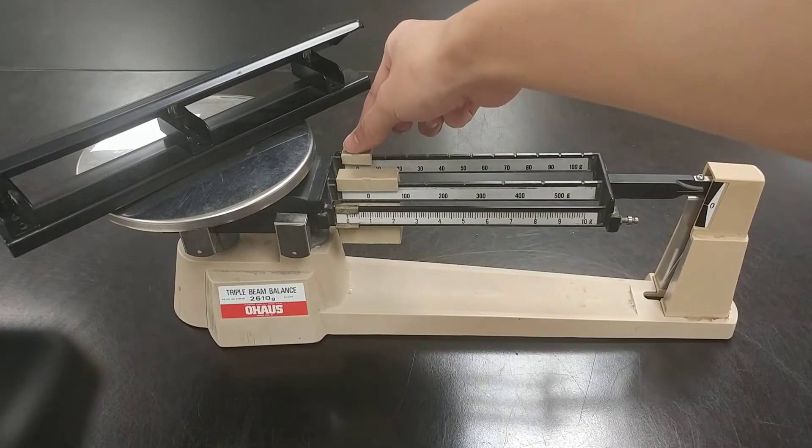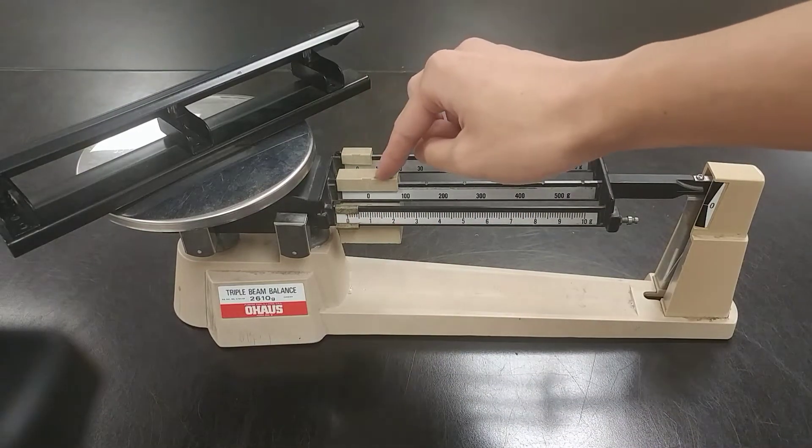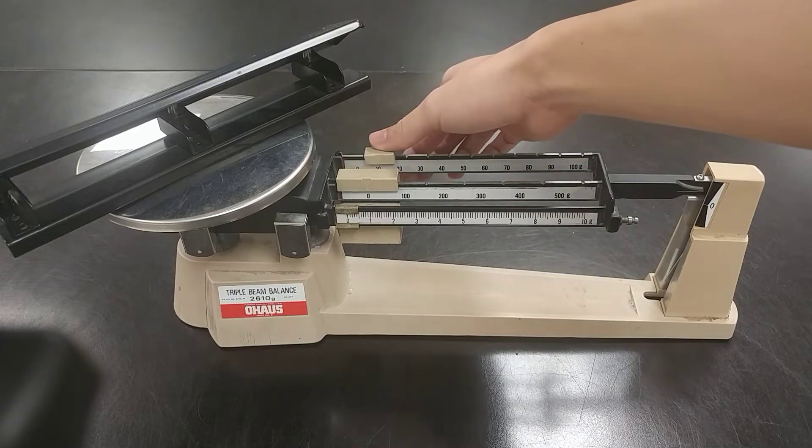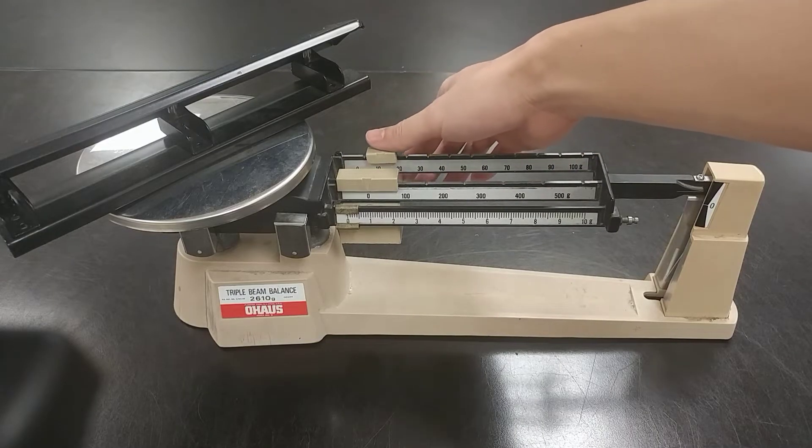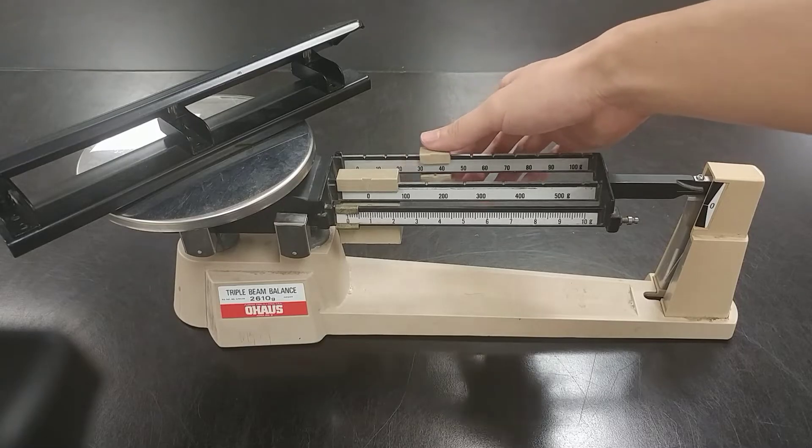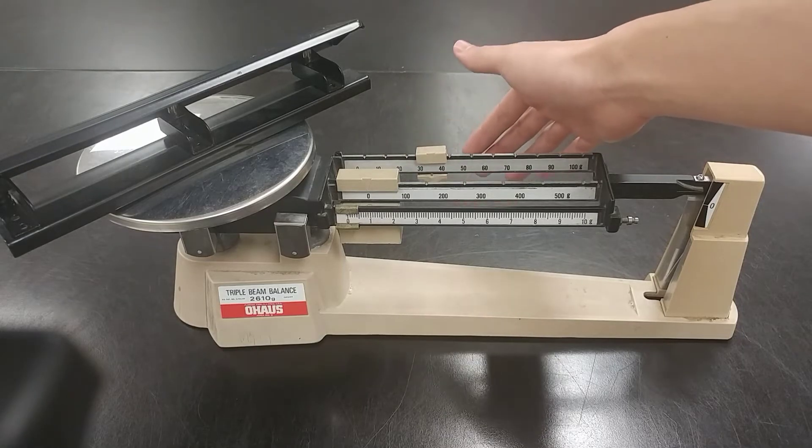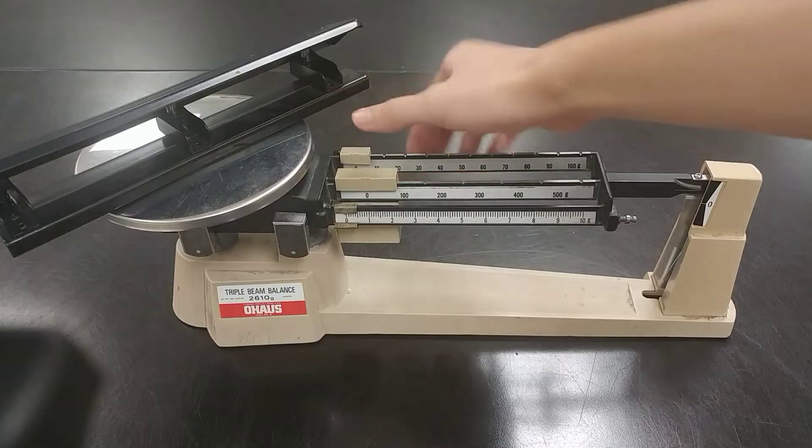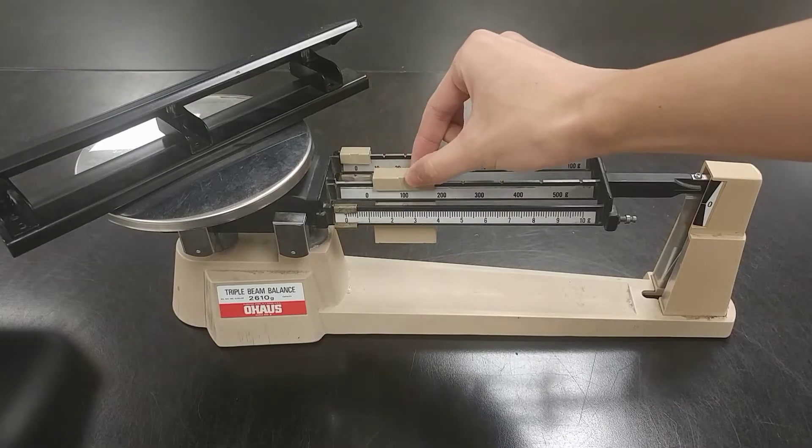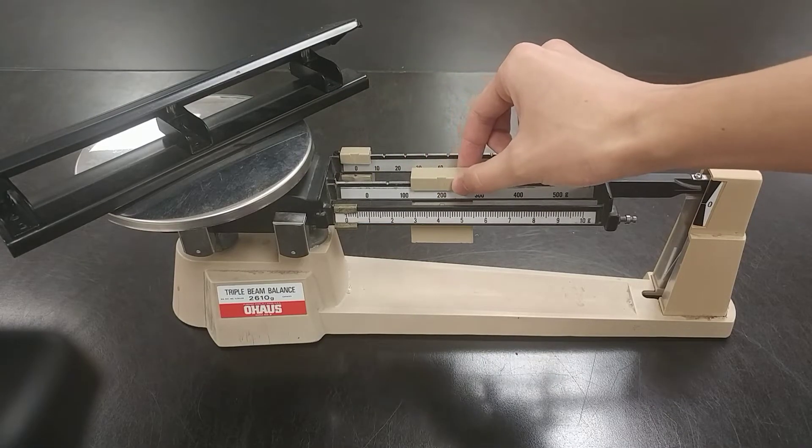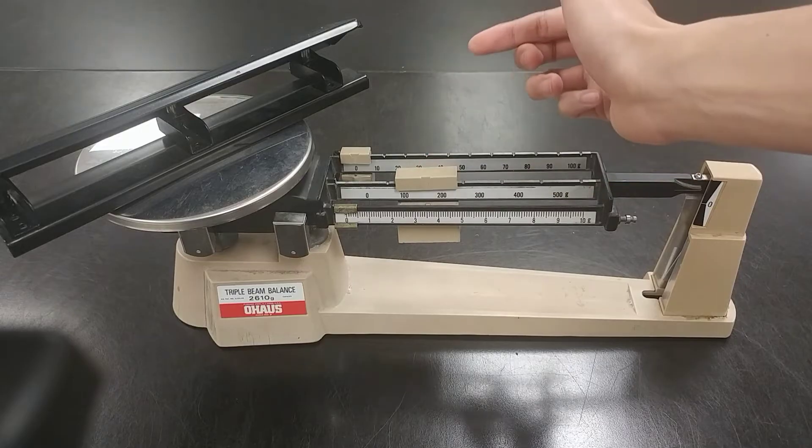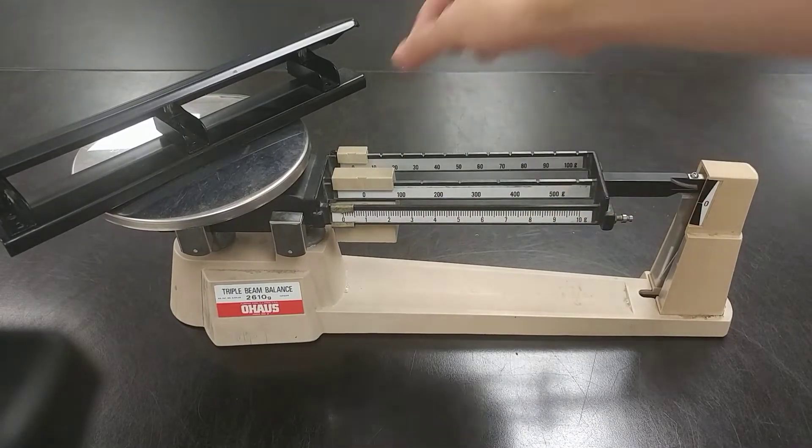Now we're going to try the medium one. Both the medium and the big one must be exactly on the number. For example, the medium has to be on 10, 20, 30, or 40—it can't be anything in between. The same with the big one: it can either be on zero, 100, or 200. It can't be in between because there's no number there.